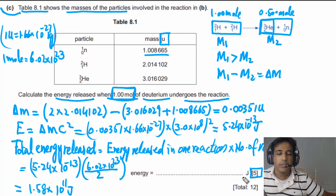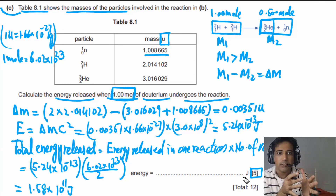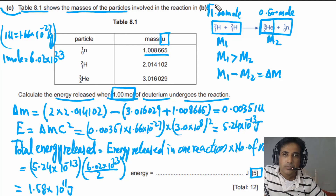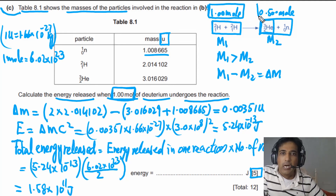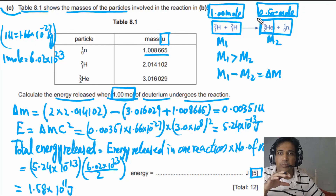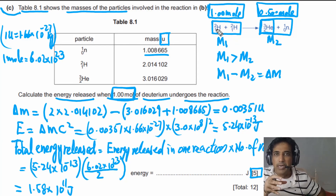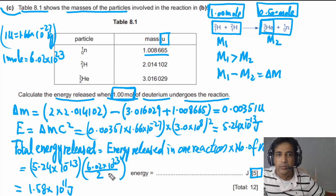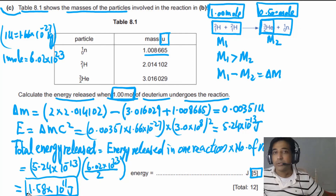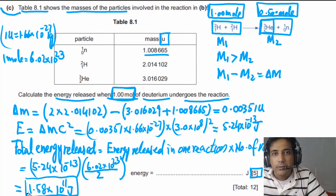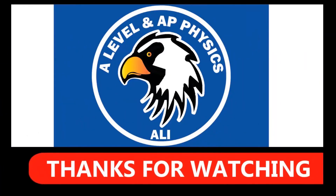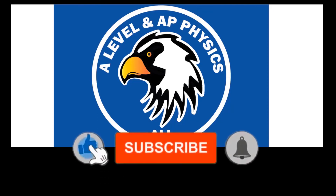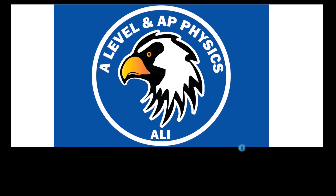This is a standard method to calculate energy released in any nuclear reaction. The only tricky part is recognizing that one mole of deuterium gives 0.5 moles of helium, which is why we divide by two. I hope this question is clear. If you have any questions, please leave them in the comments. See you in the next video.